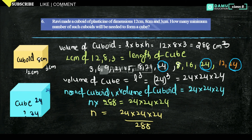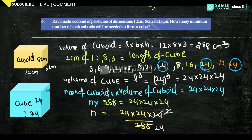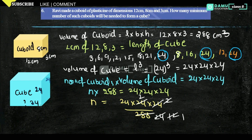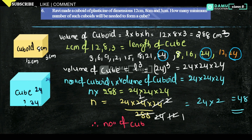So cancelling: 288 divided by 12 gives 24, and 24 into 2 gives 48. Therefore the minimum number of cuboids to form a cube will be equal to 48. Thanks for watching, please subscribe.